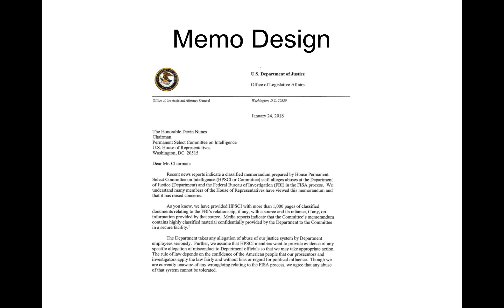It should be on official letterhead or something you've created as official letterhead. It should have the date. This particular memo doesn't have a from address or return address because that's all on the letterhead since it's the attorney general's personal letterhead. But if you didn't have that, you would include the return address, the date, the information to the recipient, and then the rest of the content.